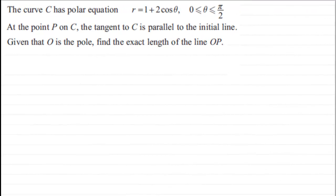Hi. Now, in this question on polar coordinates, we're told that we've got this curve C which has polar equation r equals 1 plus 2 cos theta, for theta greater than or equal to 0 but less than or equal to pi upon 2 radians.